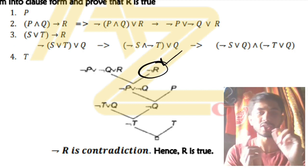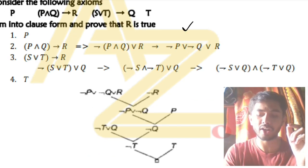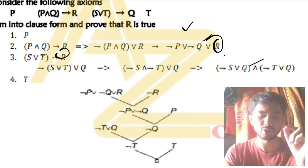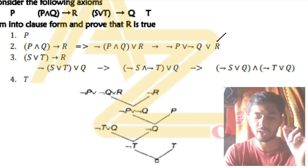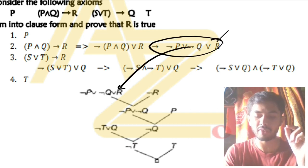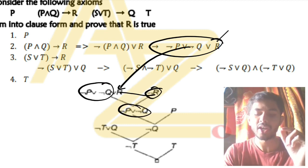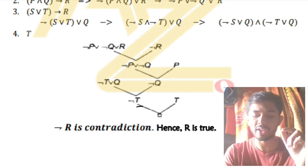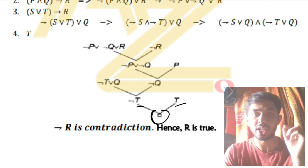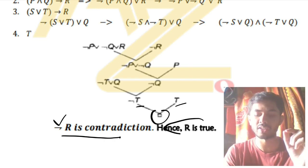After writing not-r, search for r in the clause set — it can be found in two places; choose the better match. Cancel not-r with r and write the remaining terms. Keep finding opposites and negating until you reach an empty clause — null. Reaching null means not-r is a contradiction, therefore r is true. That's how you prove it using resolution in propositional logic.